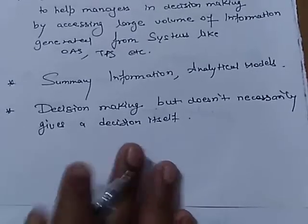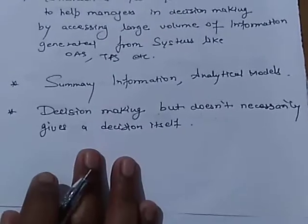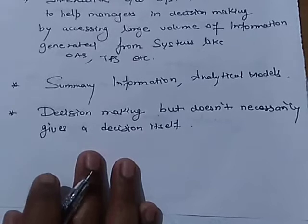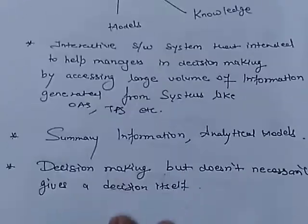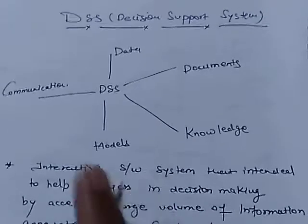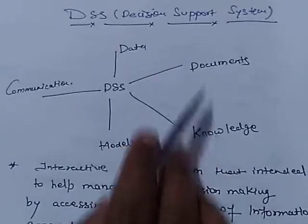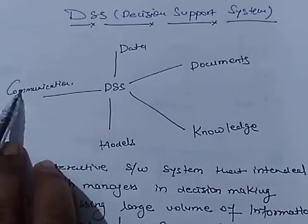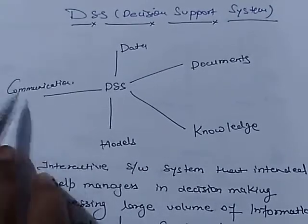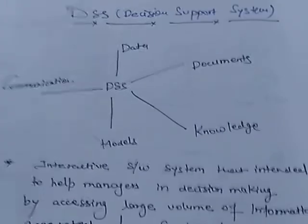We can also say that decision makers compile useful information from raw data, documents, personal knowledge, business models, and various communications to solve problems and make decisions.